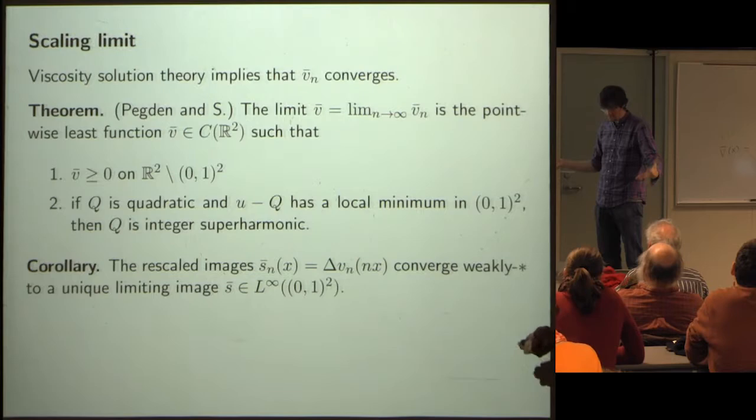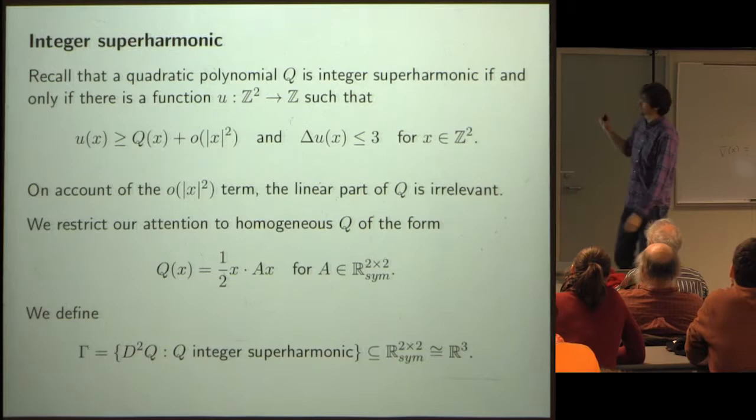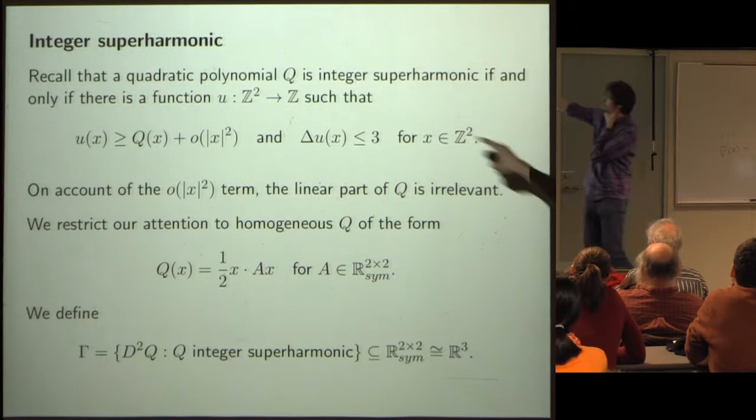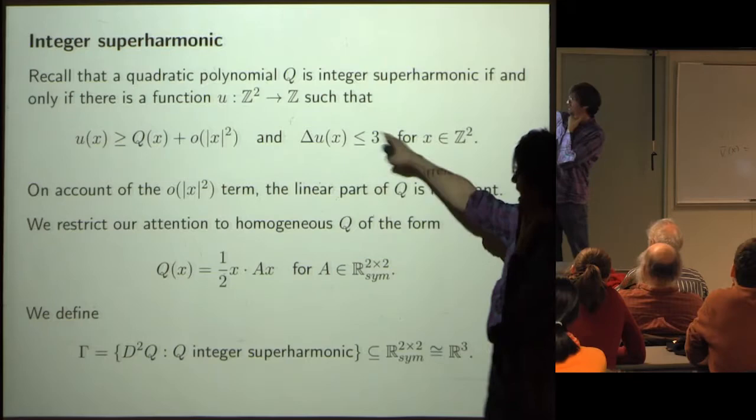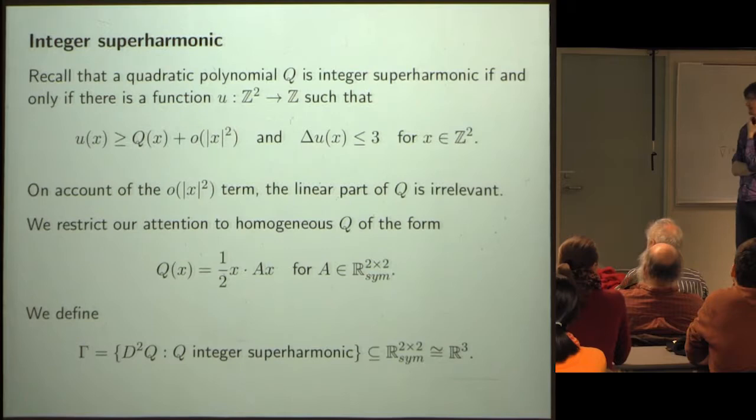The next thing we wanted to do is really explain the fractal. We don't just want to know there is a limiting image — we want to understand it. To do that, we need to understand better this set of integer superharmonic quadratic polynomials. The set gamma is the set of Hessian matrices that give integer superharmonic polynomials — a subset of 2-by-2 real symmetric matrices, which has real dimension three.